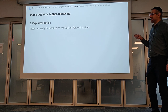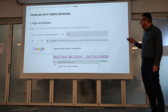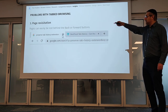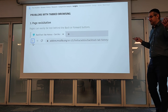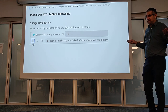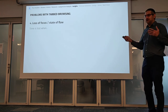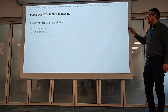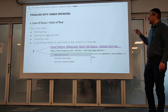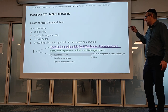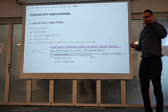Thirdly, there's an issue of page revisitation. To get back to a page, it's not always in a tab — sometimes it's behind the back button or forward button. For example, if I open a link in a new tab and then close the original tab, the back button is disabled because the browser decided not to copy over the history. So you'll never find that page again — the browser doesn't keep track of the structure. Finally, it's very easy to lose your focus or state of flow because of time wasters: multitasking, waiting for pages to load, deciding whether to open a link in a new tab or the same tab. All these little interruptions break your flow.